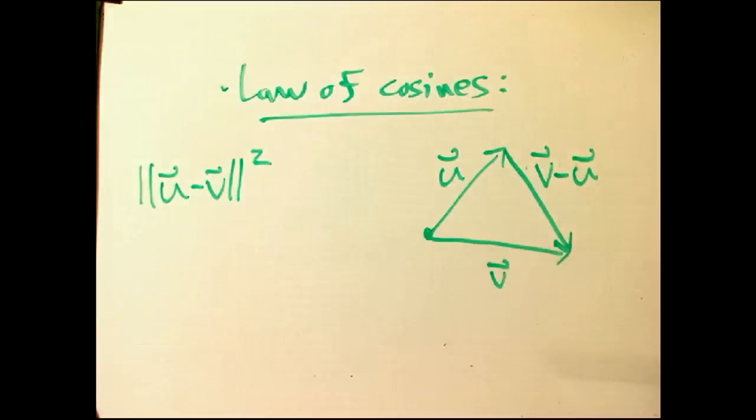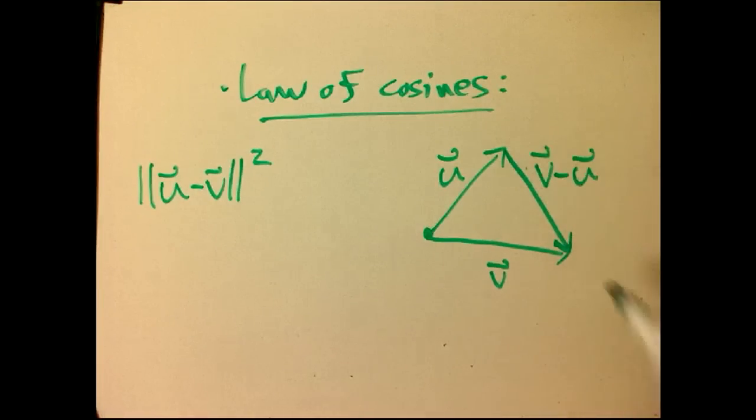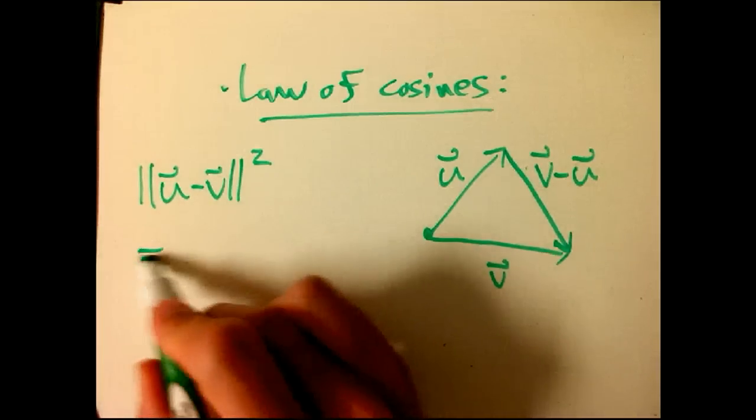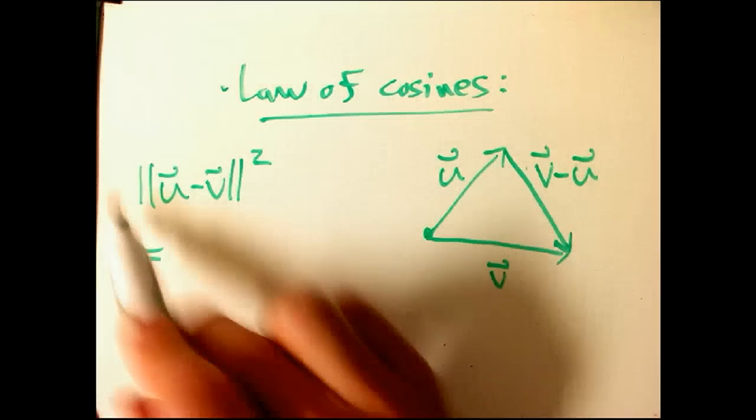of u minus v. That's this guy. So that's just the length of that side of the triangle. So, we're going to take a geometric notion, magnitude, and express it in terms of algebra,